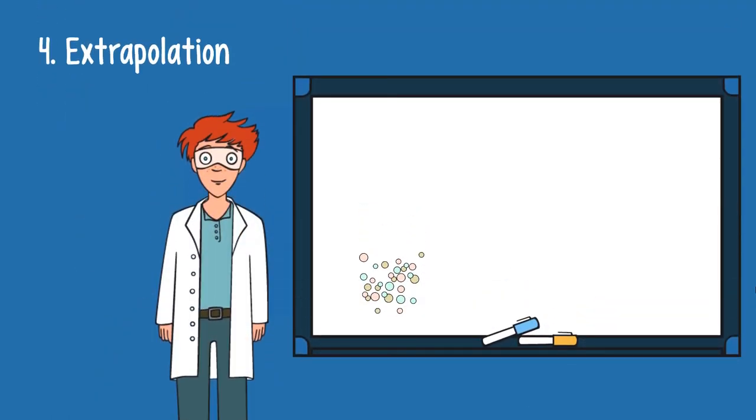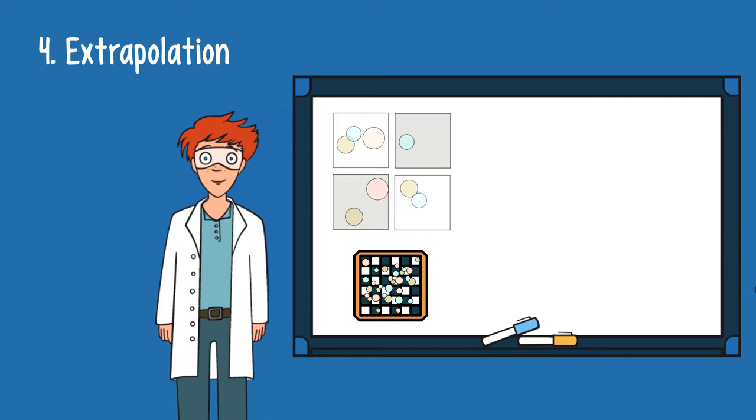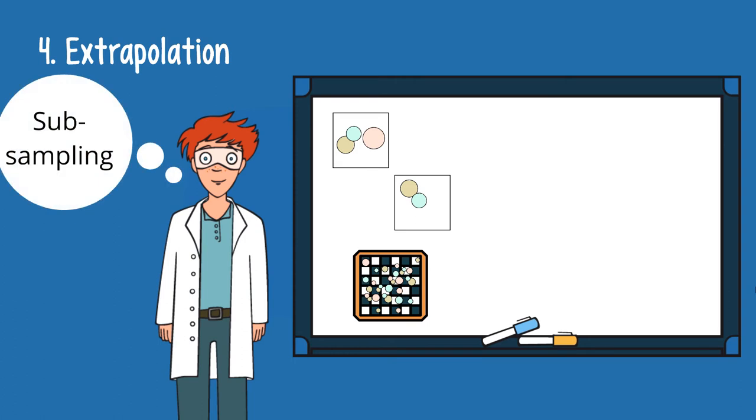Fourth, scientists are a lazy, or let's say, efficient lot. They don't count every tiny particle on the entire filter area. Instead, they put an imaginary checker pattern onto the filter area. In this study, the scientists took more than half the filter area into account, for example, by only analyzing the white squares of the pattern. This is called subsampling.